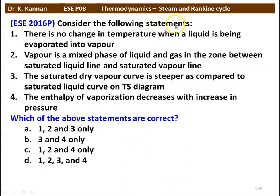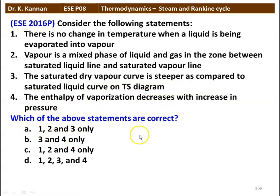Next question: consider the following statements. 1. There is no change in temperature when the liquid is being evaporated into vapor. 2. Vapor is a mixed phase of liquid and gas in the zone between the saturated liquid line and saturated vapor line. 3. The saturated dry vapor curve is steeper compared to the saturated liquid curve on the T-S diagram. 4. The enthalpy of vaporization decreases with increase in pressure. The correct answer is 1, 2, 4. The third statement is not correct — the saturated dry vapor curve being steeper than the saturated liquid curve on the T-S diagram is not true. All the other three statements are correct.